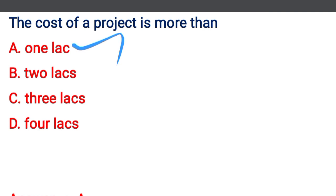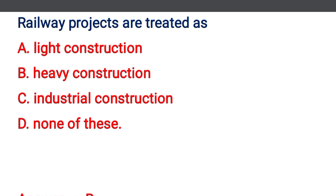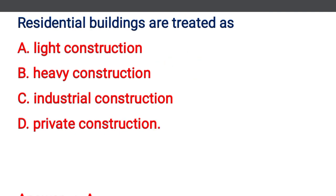The correct answer is option A: 1 lakh. Next question: railway projects are treated as — option A: light construction, option B: heavy construction, option C: industrial construction, option D: none of the above. The correct answer is option B: heavy construction.